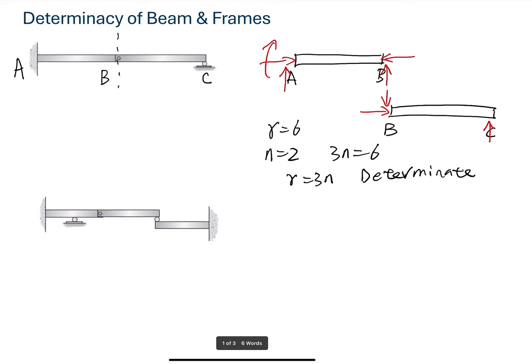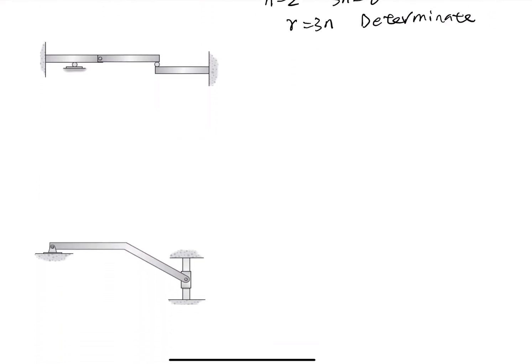Now let's look at the second example. We have a beam supported on two fixed ends. The points are labeled A, B, C, D, and E. Because we find hinge supports at C and D, we cut the beam at those points. This gives us three beam segments.